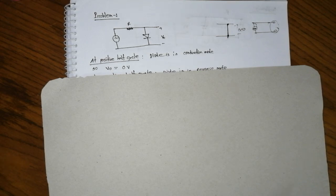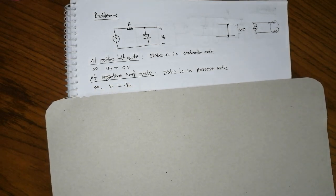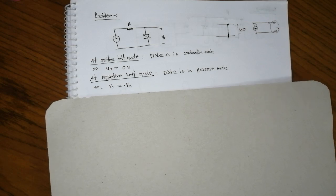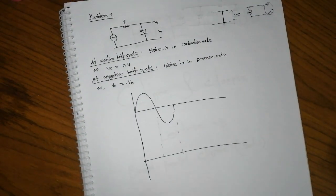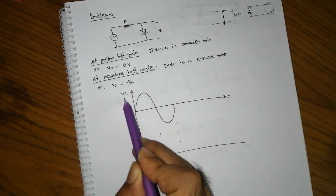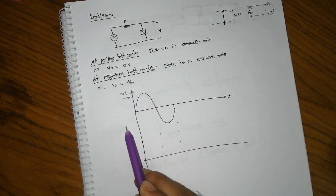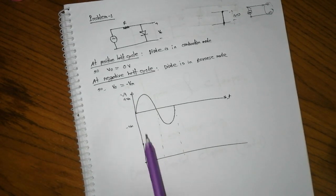V0 equals 0 voltage. At negative half cycle, diode is in reverse mode.